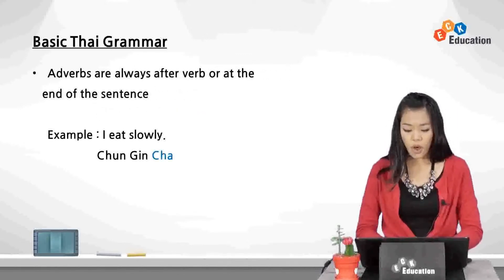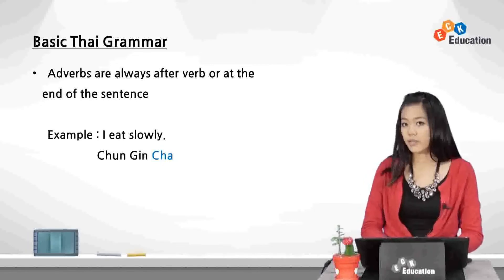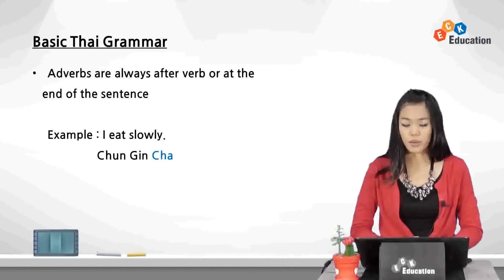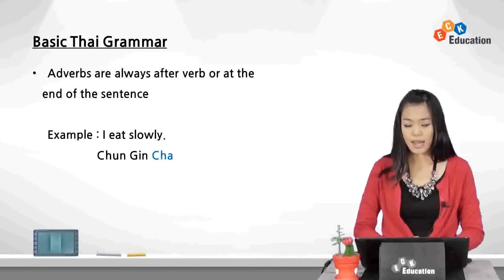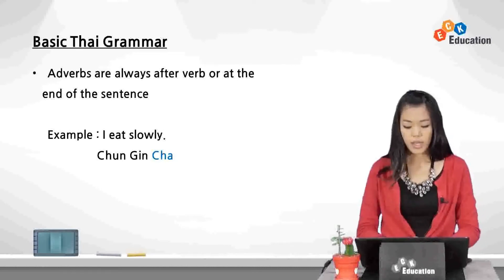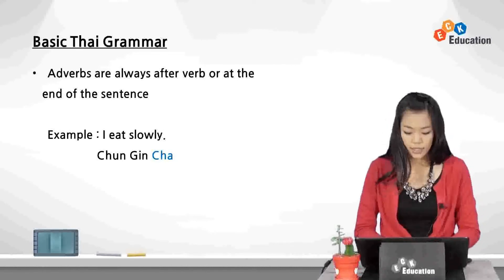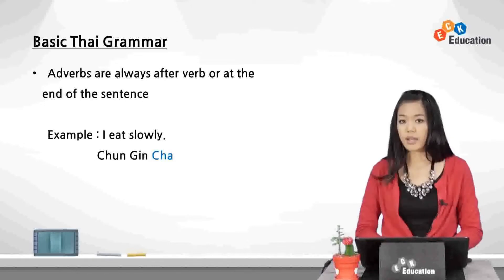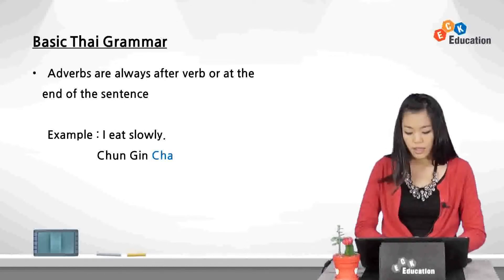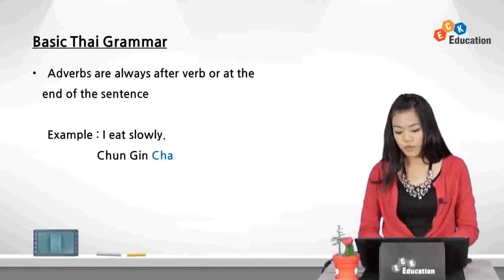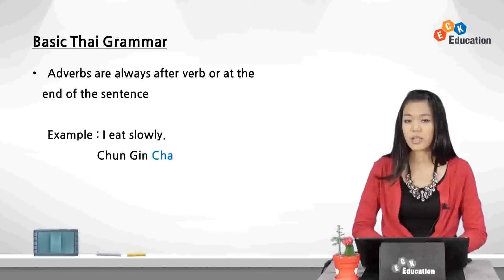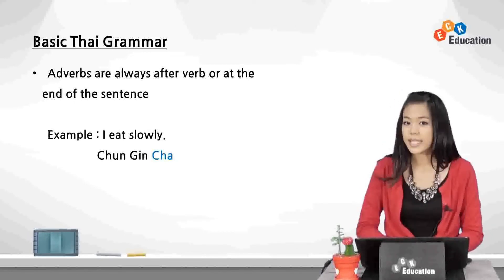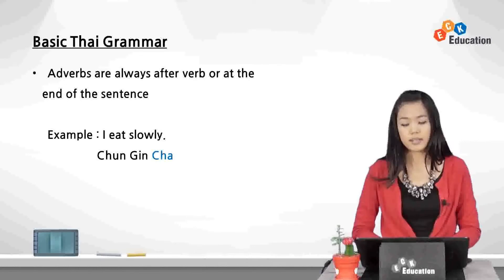Adverbs are always after the verb or at the end of the sentence. For example, 'I eat slowly' — chan gin cha. Chan means 'I,' gin means 'to eat,' and cha means 'slowly.' So cha is put after the verb to describe how the subject is doing that action. Gin cha means 'eat slowly.'